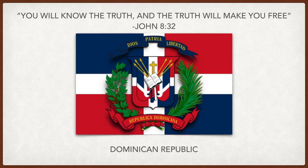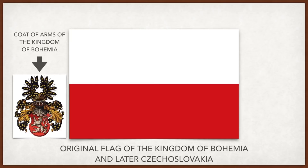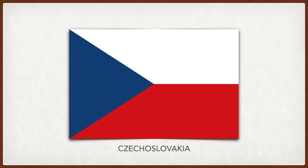Czech Republic: the original flag was based on the coat of arms of the Kingdom of Bohemia, and later for Czechoslovakia a blue triangle was added. When Czechoslovakia split into two countries, there was an agreement that neither would use old Czechoslovakia state symbols; the Czech Republic violated this prohibition and used this flag as their own.